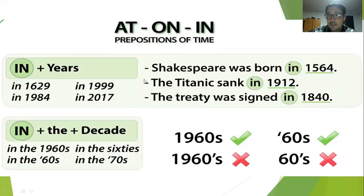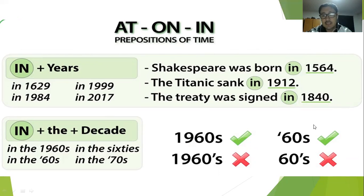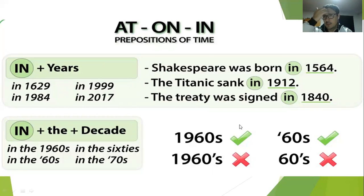¿Cuándo más? Con años — el año solito: in 1912, in 1840. Lo mismo con las décadas: in the 60s — en los 60, in the 70s — en los 70. También para los años en general.